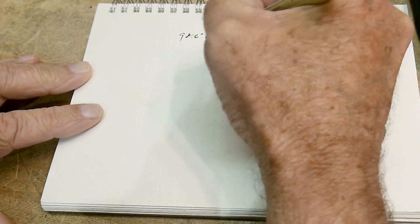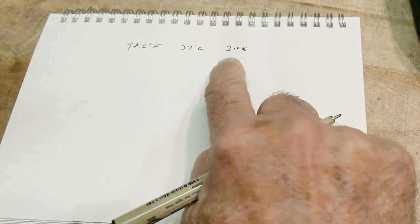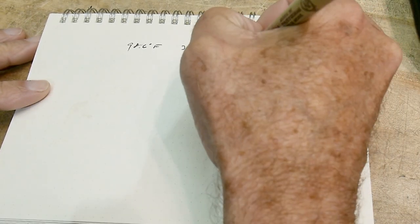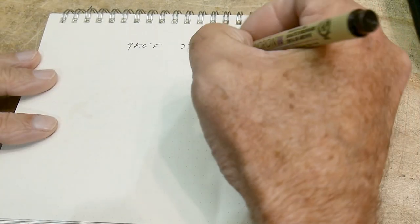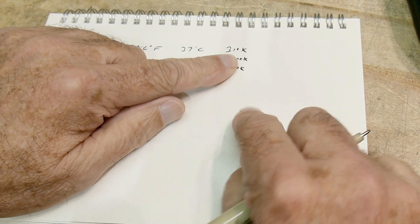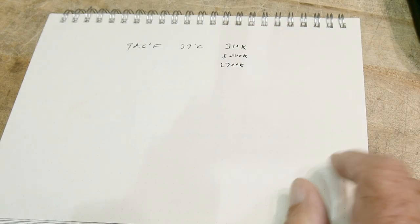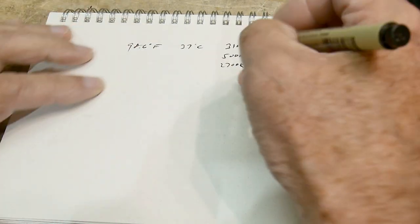We are 98.6 degrees Fahrenheit, which is 37 degrees centigrade, which is 310 degrees Kelvin. How hot is the sun? 5000 Kelvin. The tungsten light bulb is 2700 Kelvin. We're only 310 Kelvin, so we need to see that. This wavelength was around 555 nanometers, this one around 1,000 nanometers. What about 310?